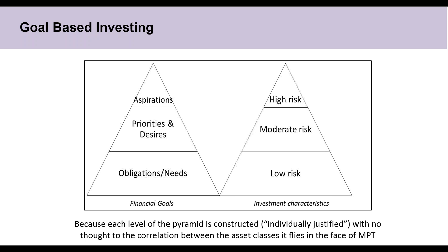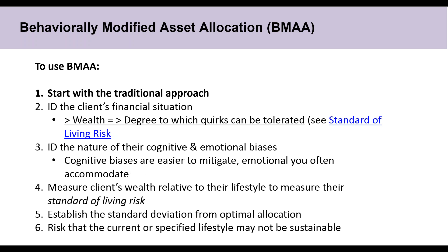The second framework is behaviorally modified asset allocation, or BMAA. This strategy looks to integrate as many elements of traditional portfolio theory as possible while also constructing a survey to understand where clients might deviate from the ideal rational economic actor. BMAA creates some freedom for clients to deviate from the optimal rational portfolio while still striving to design an investment strategy as close to the efficient frontier as possible. The idea is creating a portfolio clients can understand and live with through market ups and downs — that's better than a perfect asset allocation if a client sells out at market bottom.